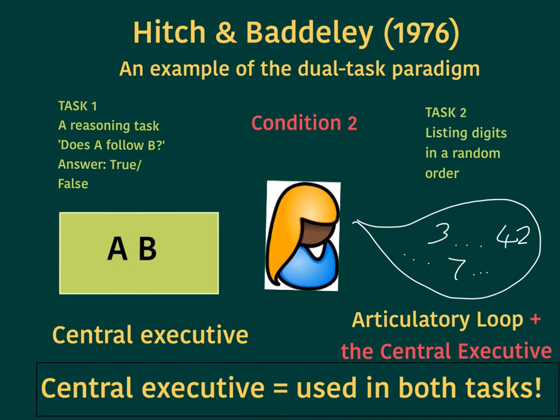Now, if the dual task paradigm is correct, then what we would expect to see is that in condition two, the task one reasoning task should be performed at a slower rate whilst people were also doing task two, which involved a reasoning task. And indeed, this is what we did see. Participants in condition one were able to do task one much more quickly than participants in condition two, so this does support the dual task paradigm.